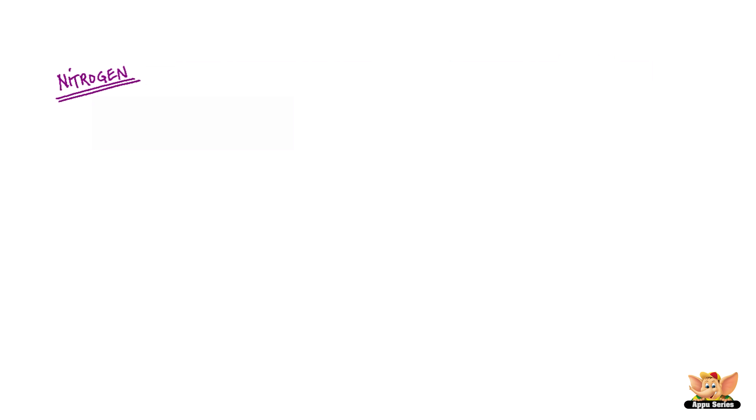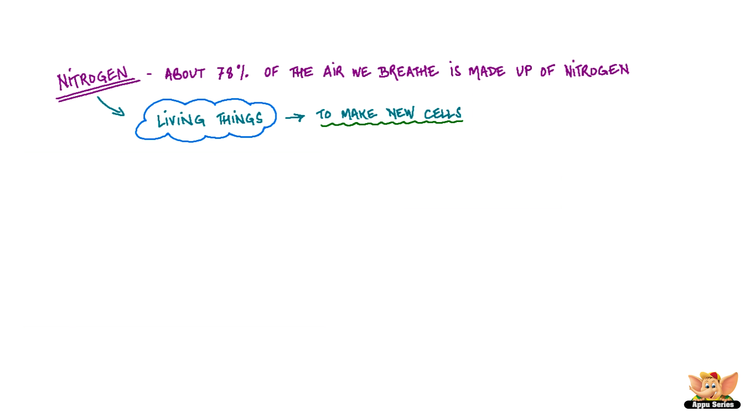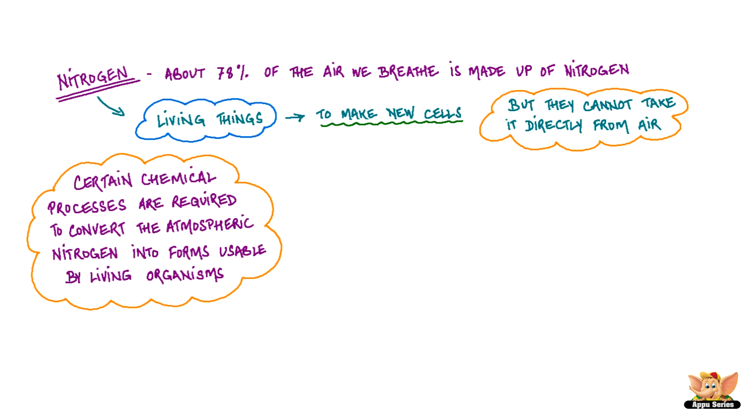About 78% of the air that we breathe is made up of nitrogen. Nitrogen is needed by living things to make new cells, but they cannot take it directly from air. Certain chemical processes are required to convert the atmospheric nitrogen into forms usable by living organisms.